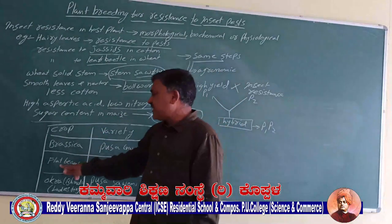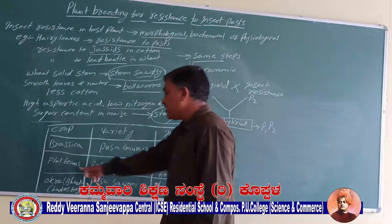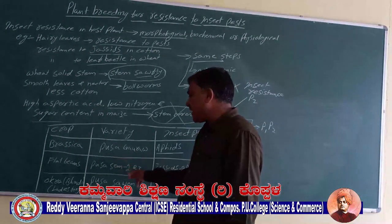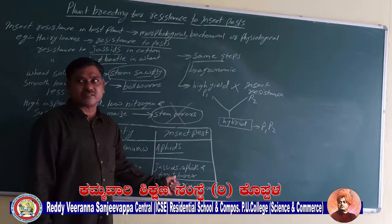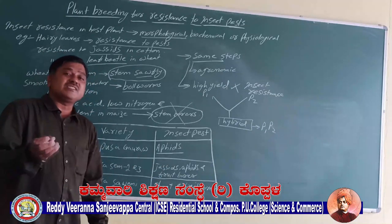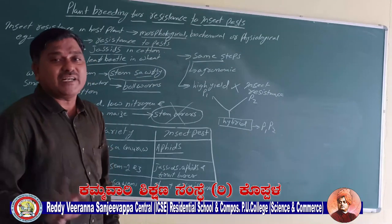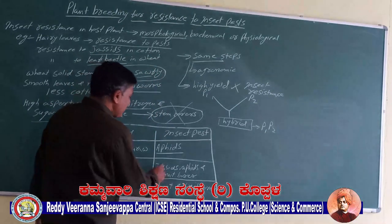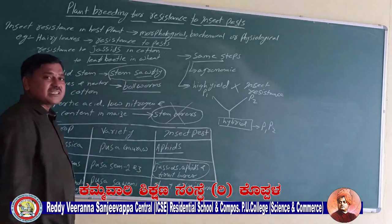Similarly, for flat beans, the varieties Pusa Sem 2 and Pusa Sem 3 were earlier sensitive to jassids, aphids, and fruit borers — these three types of insects used to affect crop yield. But after developing resistant plants, Pusa Sem 2 and Pusa Sem 3 have become resistant to these three insects.